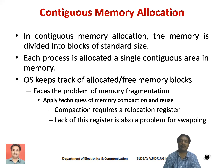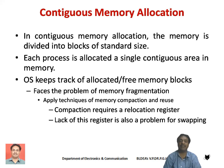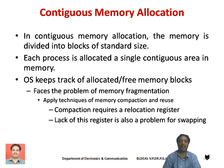In contiguous memory allocation scheme, the operating system has to allocate a single contiguous block of memory to the program. To do so, the operating system initially divides the memory into blocks of some standard size — for example, blocks of size 256 kilobytes, 512 kilobytes, and so on. After that, each process is allocated a single contiguous block of memory that is sufficient to store that process.